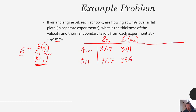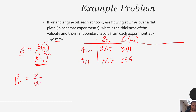Now we want to calculate the thermal boundary layer thickness, and here we use the Prandtl number. The Prandtl number is the ratio of momentum diffusivity to thermal diffusivity, which is nu over alpha. Let's look at what those Prandtl numbers actually are — this is something we would just look up in a table.